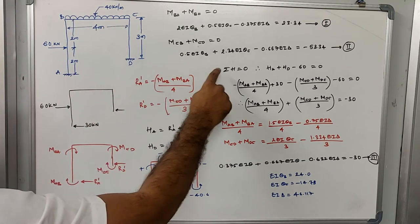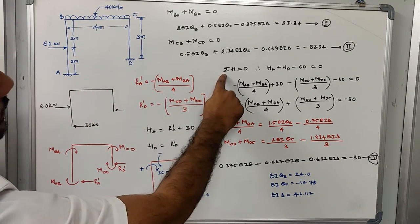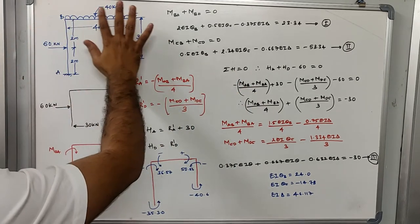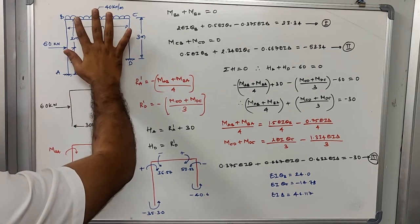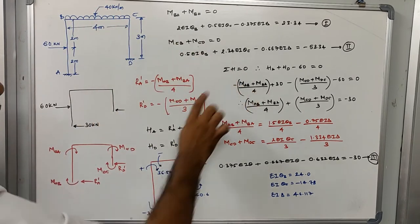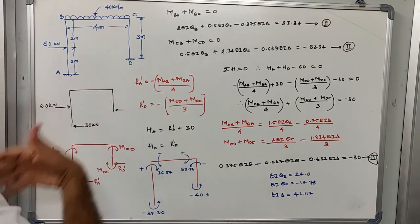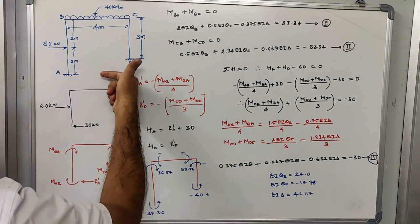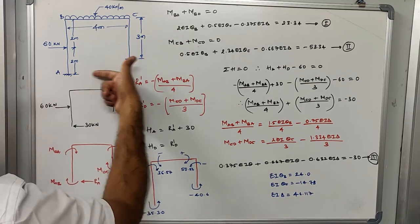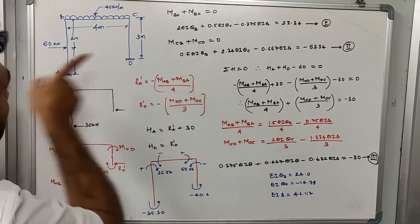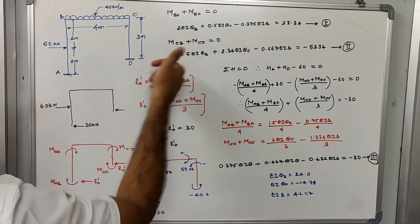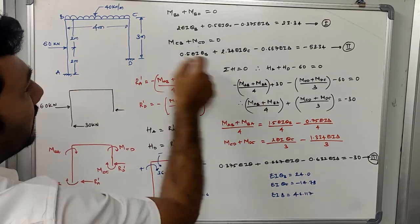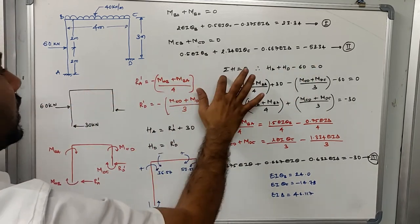The third equation is based on the whole frame: summation of horizontal forces in the frame equals zero. Assuming H_A acts in the positive direction and H_D also acts in the positive direction, we get H_A + H_D = 60, or H_A + H_D − 60 = 0. This is our third equilibrium equation.